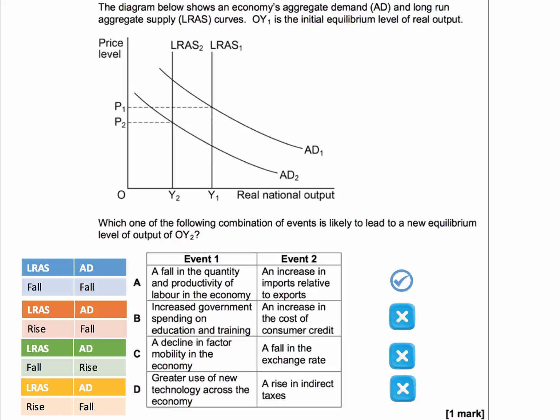So again, rise of aggregate supply, fall in AD. Incorrect. A is the right answer because both aggregate supply and aggregate demand will fall in those two events.